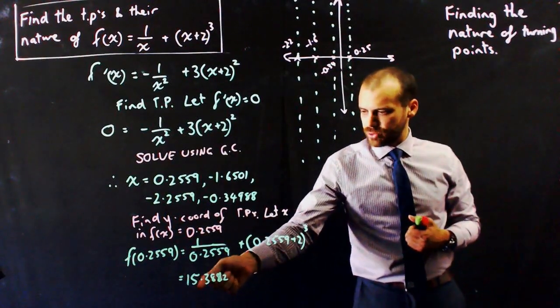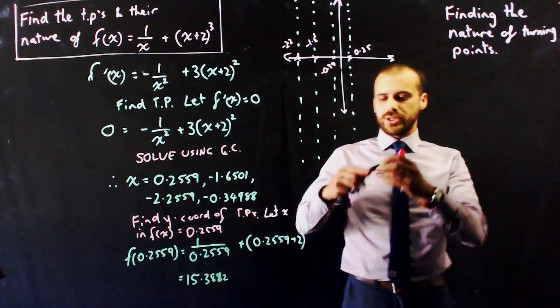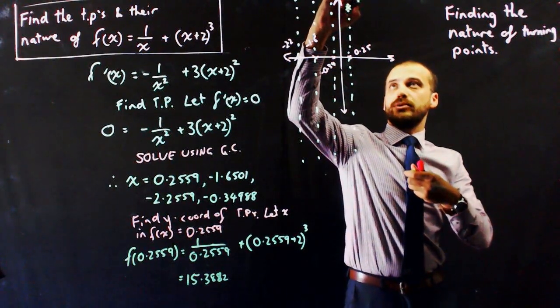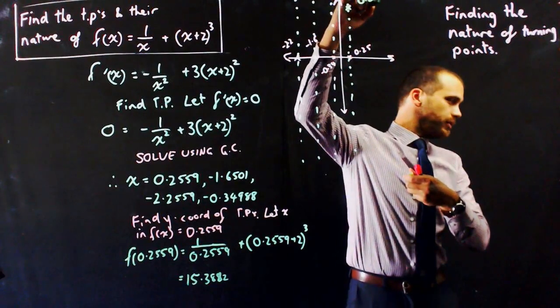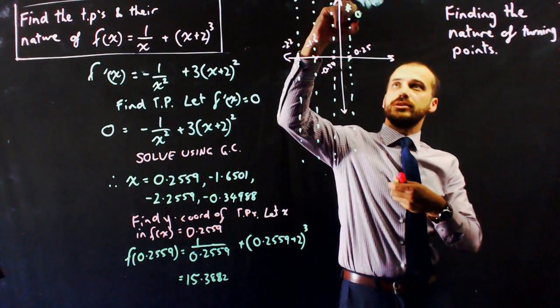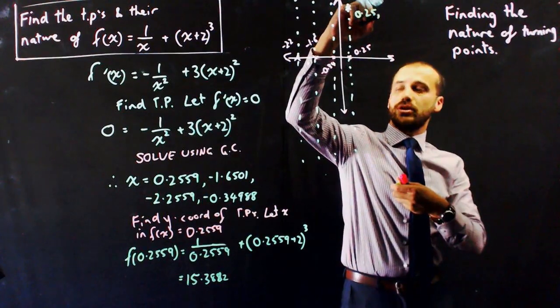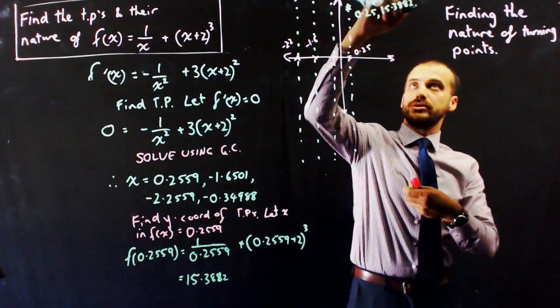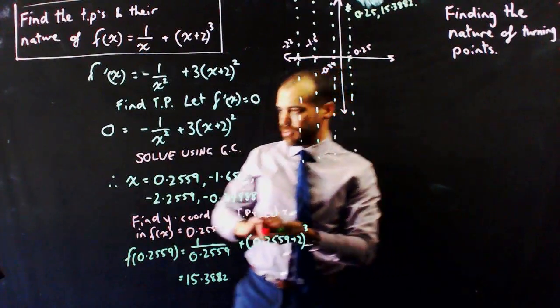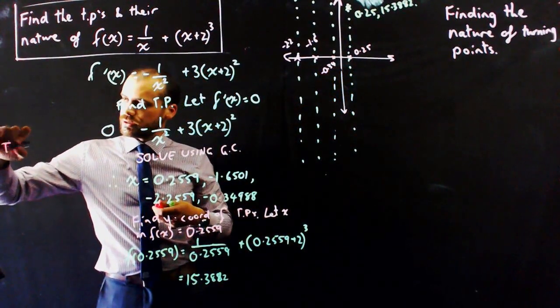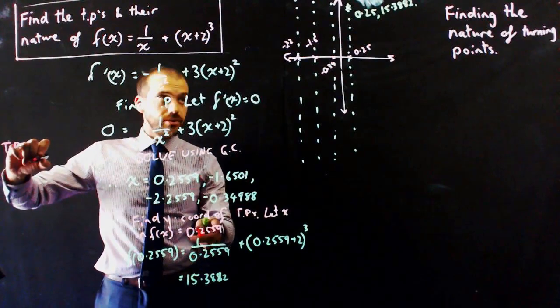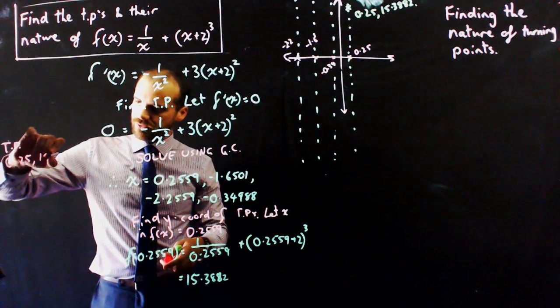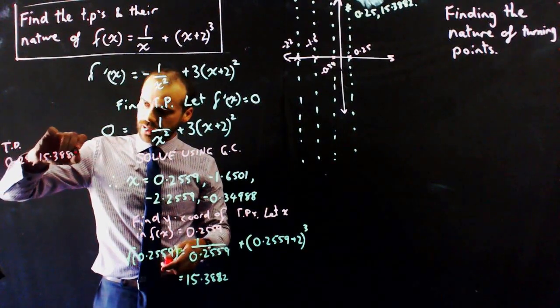So it's 15.3882. So somewhere up here. So the turning point is 0.25, 15.3882. I'm just going to start making a list of my turning points. I'm going to say, turning points. One of them is that, 0.25, 15.3882.